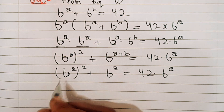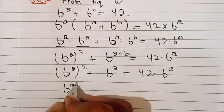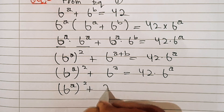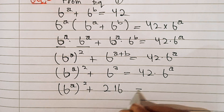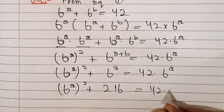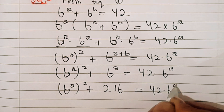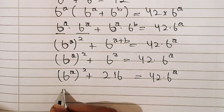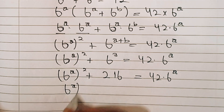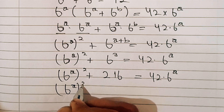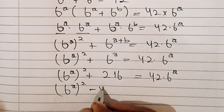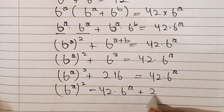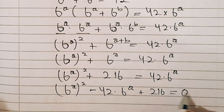In the next step, 6 cubed is 216. So we have 6 power a whole square plus 216 equal to 42 times 6 power a. Moving to the left-hand side, we get 6 power a whole square minus 42 times 6 power a plus 216 equals 0.